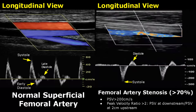Criteria for stenosis greater than 70 percent is a combination of PSV of more than 200 centimeters per second and a peak velocity ratio greater than 2. Peak velocity ratio is the ratio between PSV at the stenosis and PSV at 2 centimeters upstream from the site of stenosis. For example, in this case, if we take a downstream PSV of 200 and divide it by an upstream velocity of 60, that gives 3.3 — which is greater than 2, so the stenosis is greater than 70 percent.